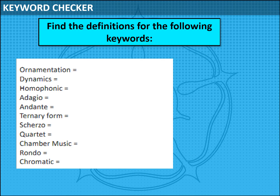Turning to activity 15.2, it would be really useful for you to be able to know what these key words mean. I want you to find the definitions for the following key words: ornamentation, dynamics, homophonic, adagio, andante, ternary form, scherzo, quartet, chamber music, rondo, and chromatic. For some of you, you might be able to recognise these and do this straight away, but for some of you that might take a little bit of research. Pause the video now and give yourself four minutes to identify those key words.